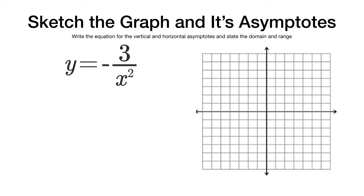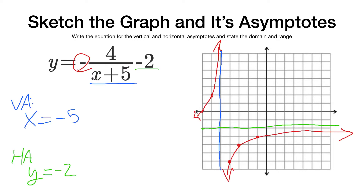Our domain is any x value except for negative 5, so x cannot equal negative 5. Our range is all y values — it goes down forever and up forever except for negative 2, so y cannot equal negative 2.